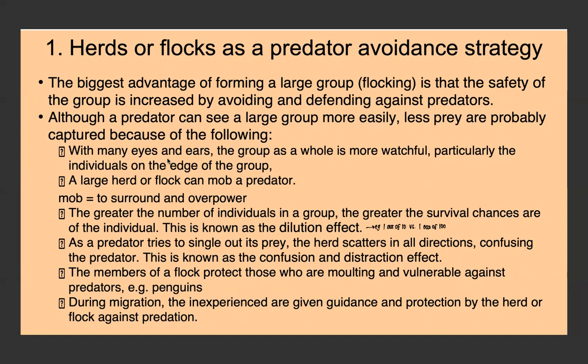If there's a large herd or flock, they can mob the predator — surround and overpower it. This is often seen in birds, where starlings will mob a raptor and keep trying to surround and overpower it to protect the individuals. Also, the greater number of individuals means greater survival chances for each individual — this is called the dilution effect. If there's a group of 10 impala, each has a 1 in 10 chance of being caught; in a group of 100, each only has a 1 in 100 chance.